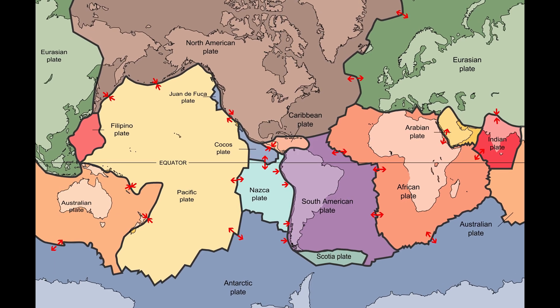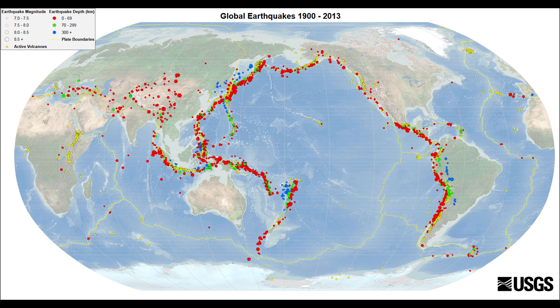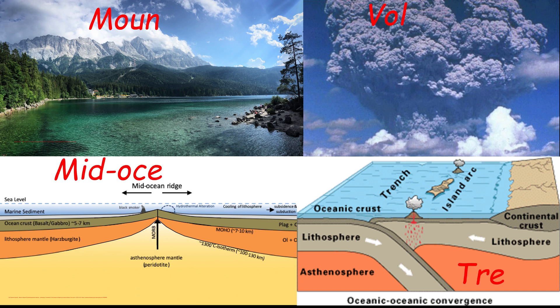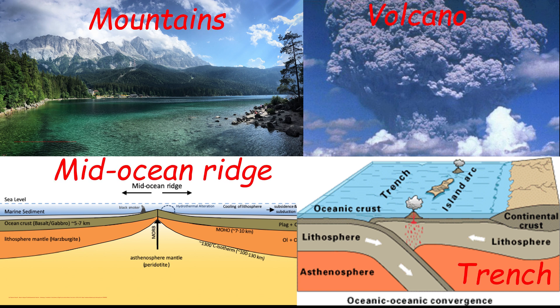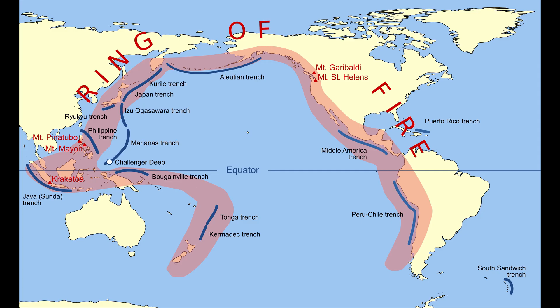A plate boundary is the point at which two plates come together. Plate boundaries correlate with geological events like earthquakes, and the formation of topographic features including mountains, volcanoes, mid-ocean ridges, and oceanic trenches. The bulk of active volcanoes on the planet are along plate boundaries, with the ring of fire being the most active and well-known.